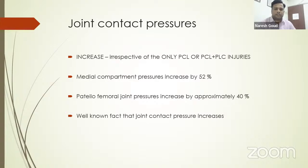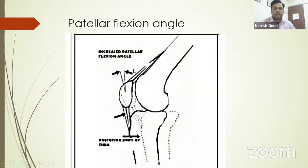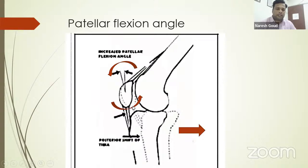Joint contact pressures increase irrespective of whether it is only PCL or PLC injuries. Medial compartment pressures increase by 52 percent after PCL deficiency, and patellofemoral joint pressures increase by 40 percent. This patellofemoral increase is explained by the patellar flexure angle increasing: when the tibia translates posteriorly, the distal pole of the patella rotates and contacts the intercondylar notch or medial femoral condyle. The extensor torque and quadriceps pull load increases, causing damage to both the patella and femoral condyle.